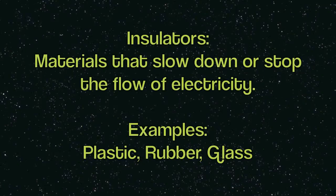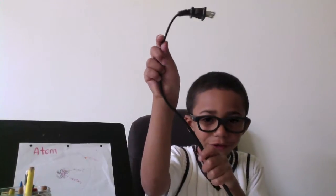Other materials, like plastic and rubber, are insulators. Insulators are materials that slow down or stop the flow of electricity. Examples: plastic, rubber, glass. For example, here's my CD player wire. An insulator means that it traps the electricity so it can't go out. That's why I'm not getting electrocuted.